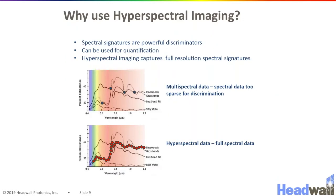Being able to identify the chemical features at each spatial pixel is very powerful because this spectral shape can be used to differentiate objects that might have similar spectral intensities in the RGB bands or even in your multi-spectral bands. For example, if your multi-spectral bands were at the points where the spectra overlap, they would all have the same intensity profile and you would not be able to differentiate these very different objects.